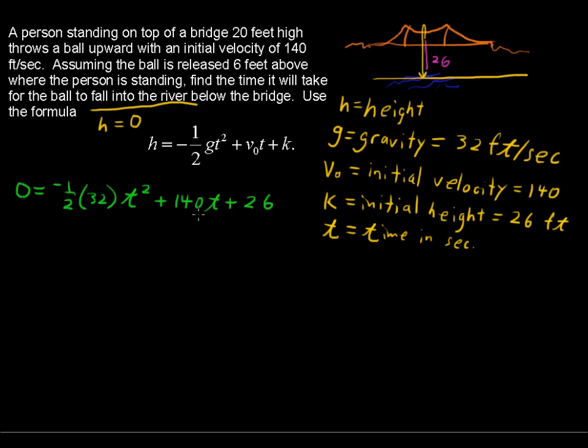This is our quadratic equation. We have zero equals negative 16 t squared plus 140 t plus 26. We have our a, b, and c. a is negative 16, b is 140, c is 26. We're going to plug all of that into the quadratic formula.